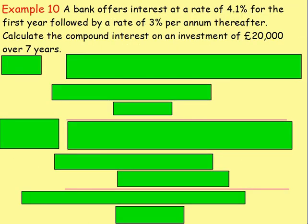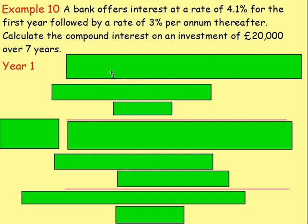Example 10: a bank offers interest at a rate of 4.1% for the first year, followed by a rate of 3% per annum thereafter. Calculate the compound interest on an investment of £20,000 over seven years. For the first year the interest rate is 4.1%, but after that it drops down to 3% — so year one is 4.1%, but years two through seven are all 3%. Because it's different for the first year, we have to work out year one separately.